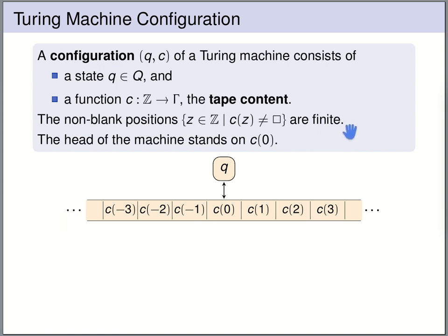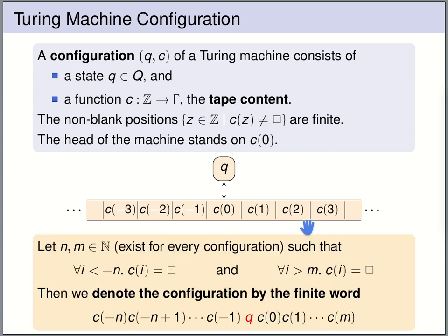We require that at each point there are only finitely many positions on the tape where the symbol is non-blank — on almost all positions there is a blank symbol, only on finitely many is there a non-blank symbol. Since only finitely many symbols are non-blank, we can denote this infinite configuration by a finite word. There exist natural numbers n and m such that left of index -n and right of index m all symbols are blank.